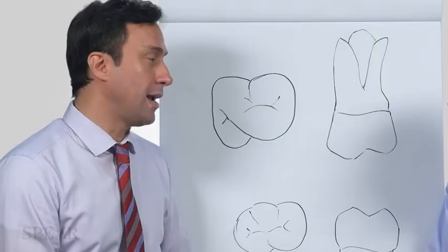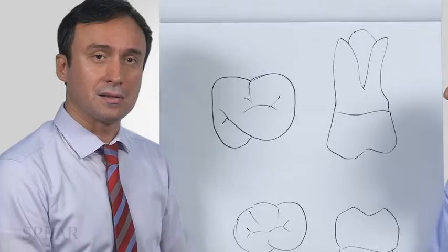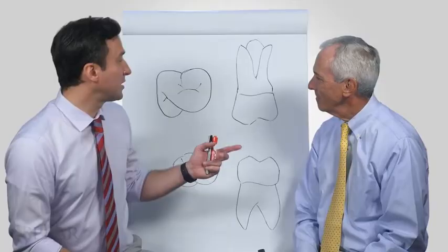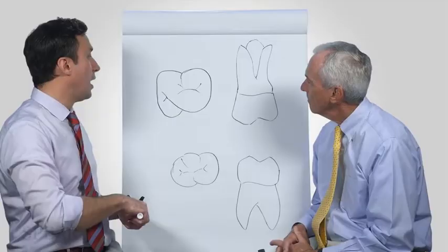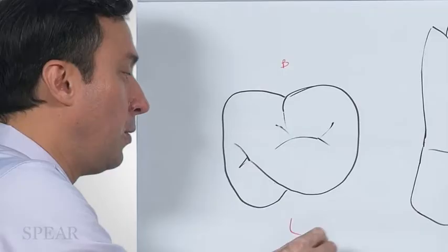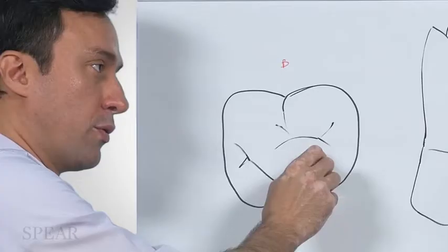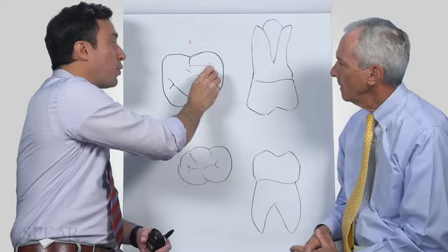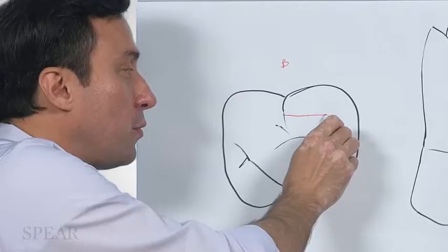Especially in the case of the maxillary molar, which is what we're going to talk about, there's a very high incidence of a fourth canal. This is the dreaded MB2 that everybody knows about. The axis preparation has evolved from triangular shaped to almost rhomboidal, and the reason why is because of the MB2.